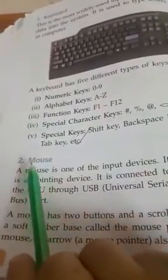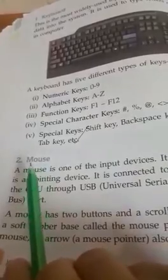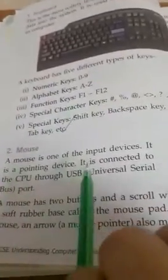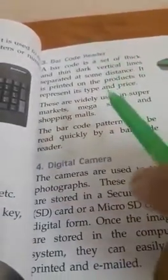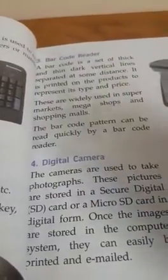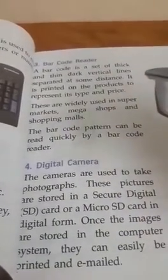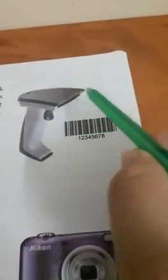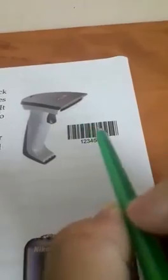The second input device we learned about is the mouse. We learned how the mouse helps us do work on the computer. The third input device is the barcode reader. A barcode reader reads a set of thick dark vertical lines, and it is used in shopping malls or hypermarkets to read the barcode and show the correct price.